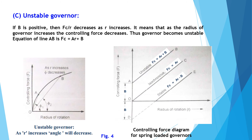The unstable governor is shown in figure 4b by curve AB. If b is positive, then Fc/r decreases as r increases, meaning the radius of the governor increases while the controlling force decreases. Thus the governor becomes unstable. The equation is Fc = ar + b. For the unstable governor, as r increases the angle decreases.